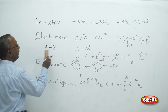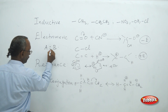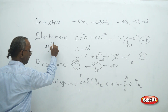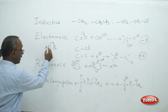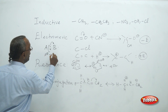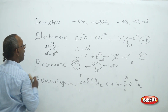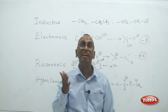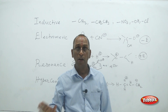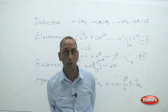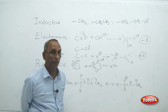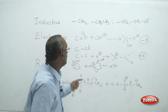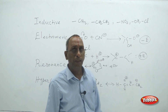Heterolytic fission means one of the atoms will be more electronegative. If B is more electronegative than A, it will attract A's electron towards itself. If A's electron goes to B, A becomes positively charged and B becomes negatively charged — ions are formed. Heterolytic fission involves total shifting of the pair of electrons towards the more electronegative atom, resulting in the formation of ions.